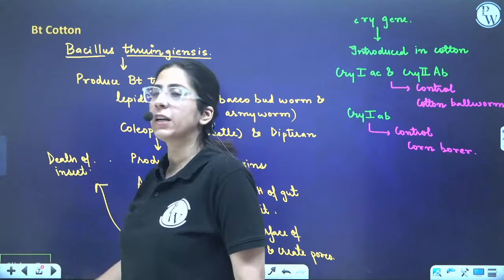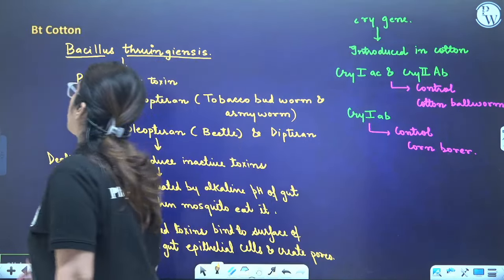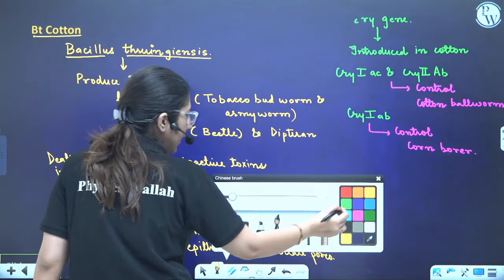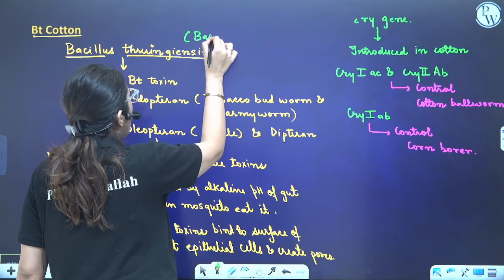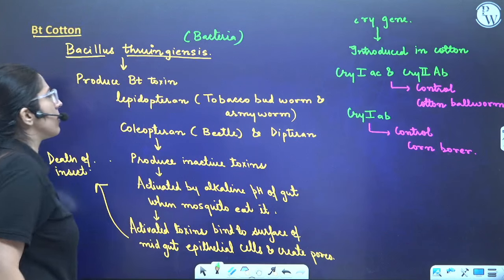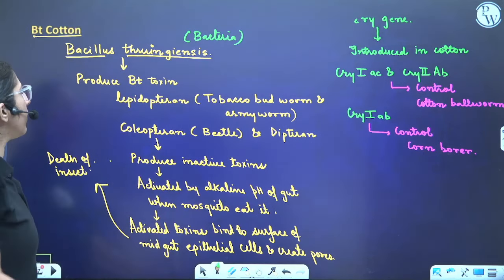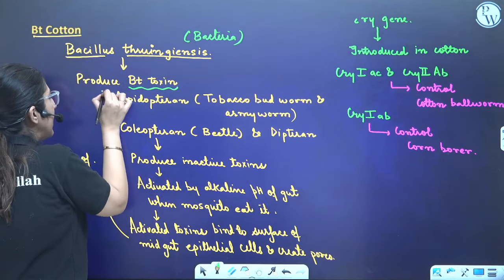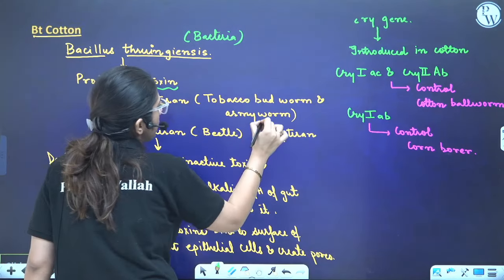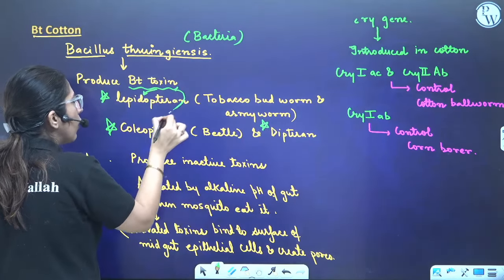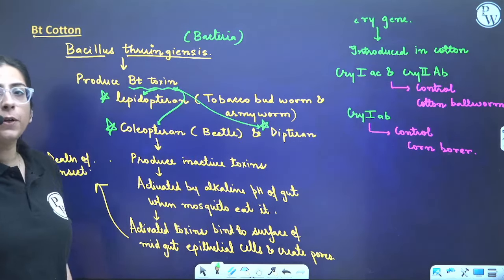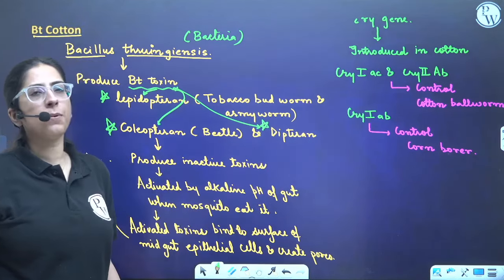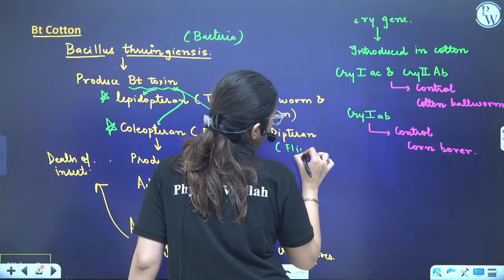The first genetically modified crop is BT cotton. There was a bacterium named Bacillus thuringiensis. Scientists realized it was producing BT toxins, which badly infect Lepidopterans, Coleopterans, and Dipterans. Lepidopteran examples from NCERT include the tobacco budworm and army worm. Coleopteran is the beetle. In Diptera, it is flies and mosquitoes.